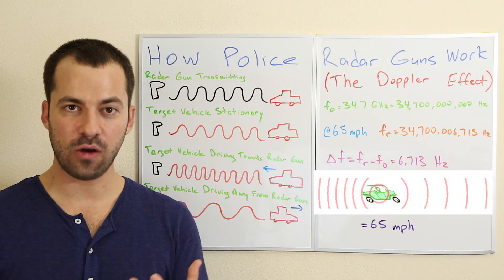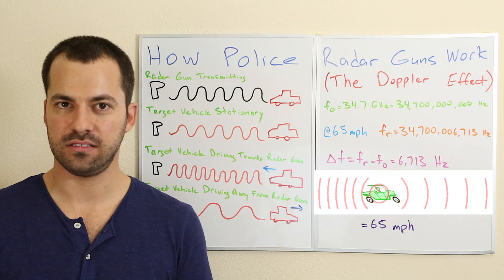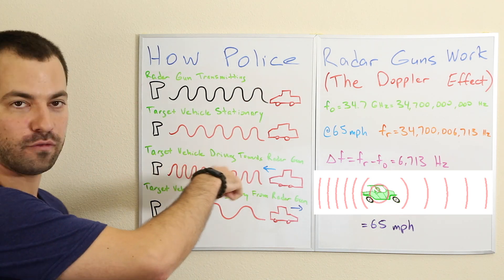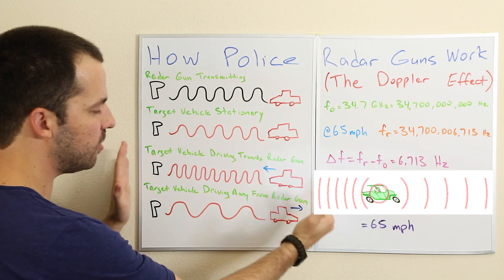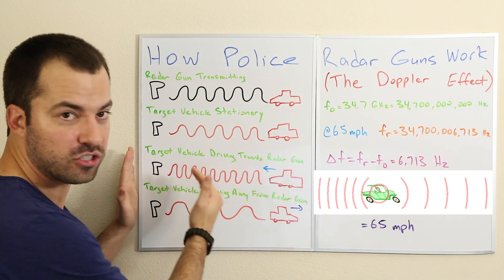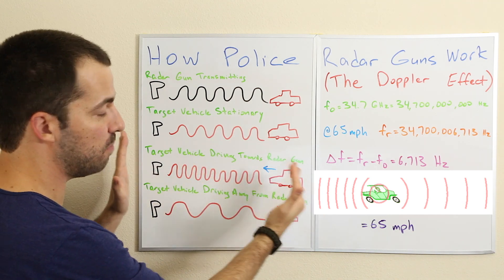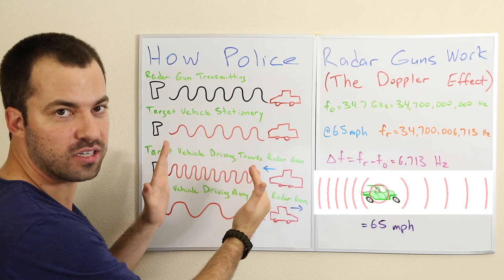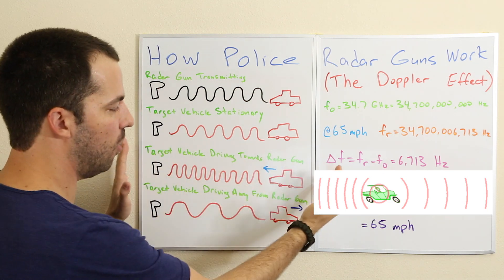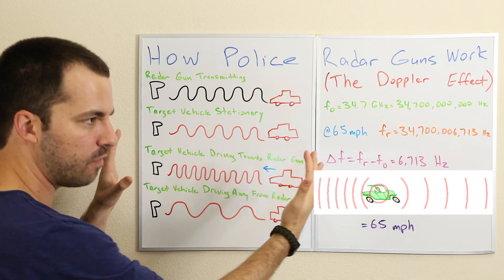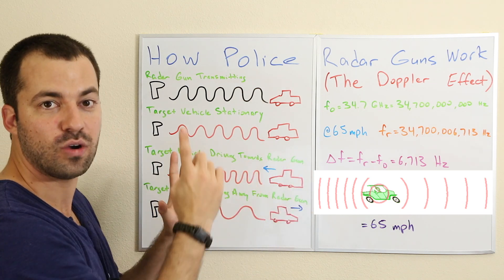What's happening is the sound coming from the engine has a certain frequency for the pitch of that sound. When the car is driving towards you, that sound wave it's emitting actually gets compressed to a certain extent — due not just to the sound of the engine, but also the movement of the vehicle compressing the sound wave — which leads to a higher pitch.